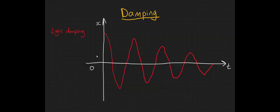We just saw an example of light damping. This is where the resistive forces are large enough to cause the amplitude to decrease in each oscillation, but without affecting the period of the oscillations.